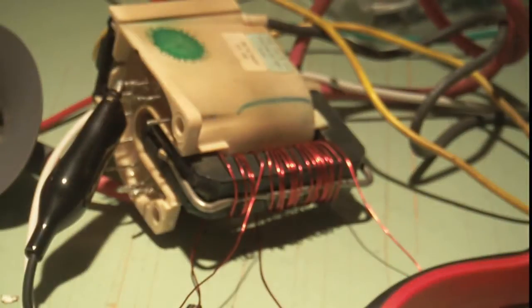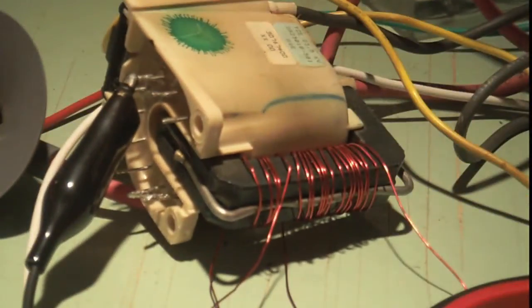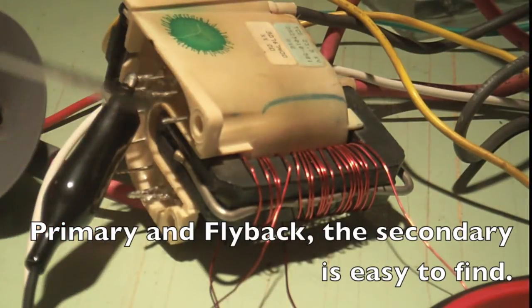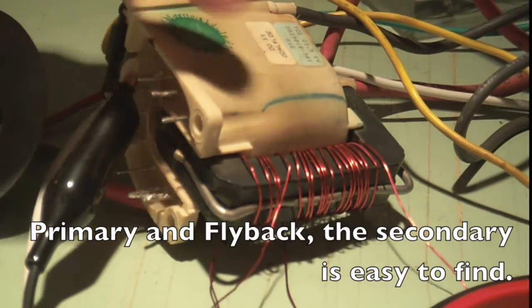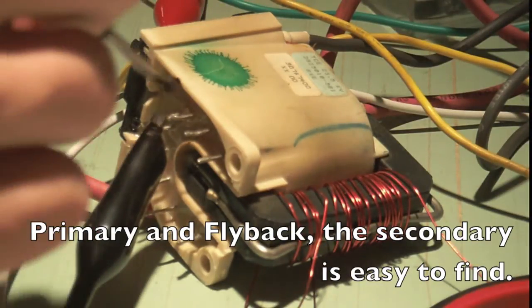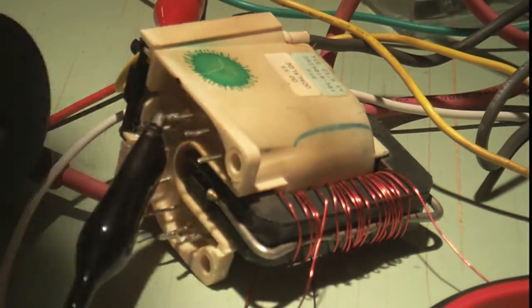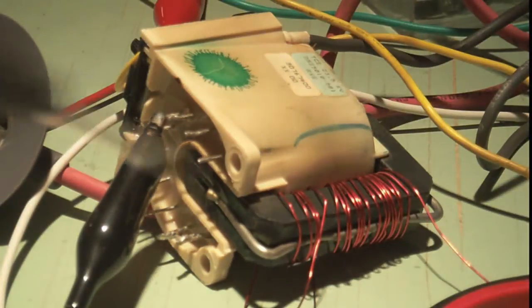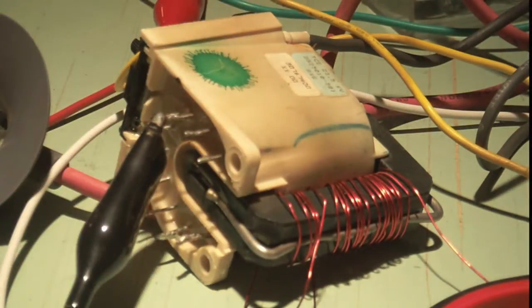So problems with the previous Flyback design had been in the past, at least my design, were that you actually had to find the pinout of the Primary and Secondary, which took a lot of time and effort. It was a pain in the butt to go through and actually map out every pin and figure out which connections worked. So it's much easier to get yourself some magnet wire, just like this, regular magnet wire, and just wrap it around and form your own Primary and your own Flyback coil.